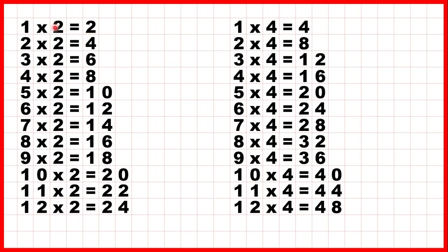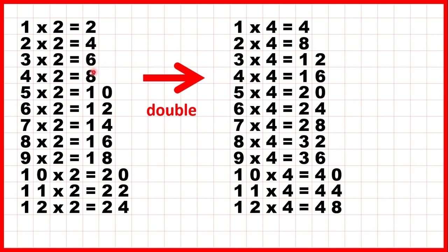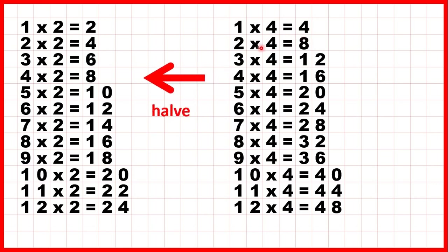We can see here we've got our 2 times table written out and our 4 times table as well. Notice that if we double what's in the 2 times table, we get what's in the 4 times table. Remember, to double a number we're adding the number to itself, or multiplying it by 2. So 2 times 2 is 4, 4 times 2 is 8, 6 times 2 is 12, and so on. Or, looking at it the other way, if we halve what's in the 4 times table, we get what's in the 2 times table.